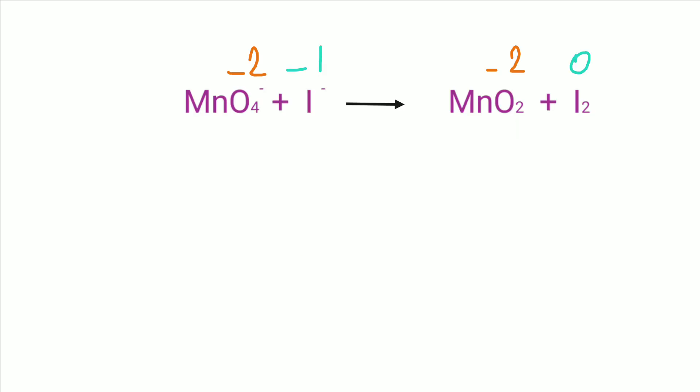Now, I have noted down the oxidation numbers of the familiar atoms. Oxygen has an oxidation number of minus 2. For iodine as a monoatomic ion, its oxidation number equals its charge, so I⁻ has an oxidation number of minus 1. On the right-hand side, iodine is in the free state, so its oxidation number is 0.